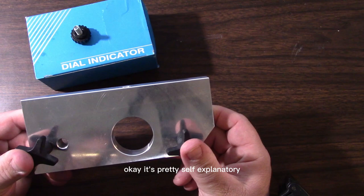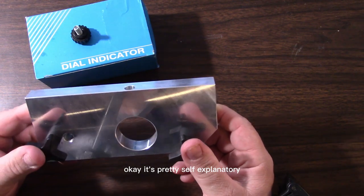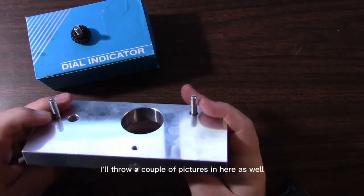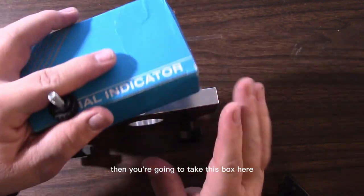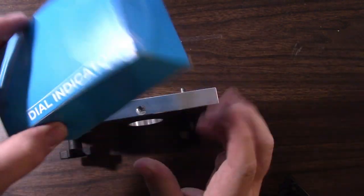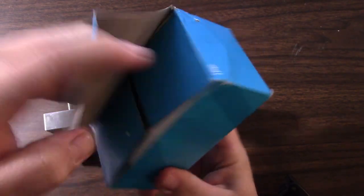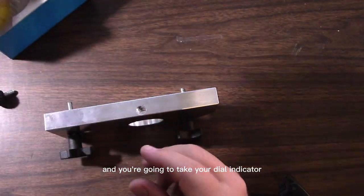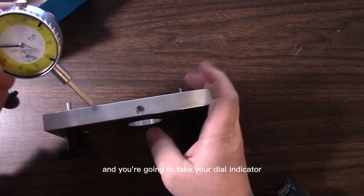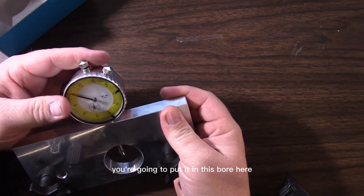They thread in onto the crankcase like this, and your crankshaft is going to sit right here in this hole. It's pretty self-explanatory. I'll throw a couple of pictures in here as well. Then you're going to take this box here with your dial indicator.